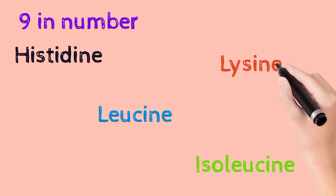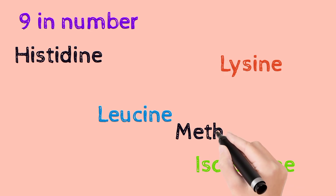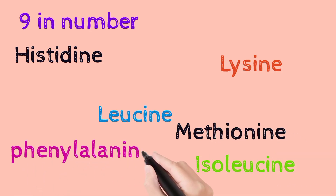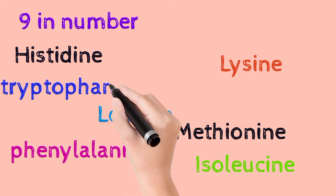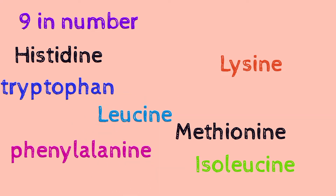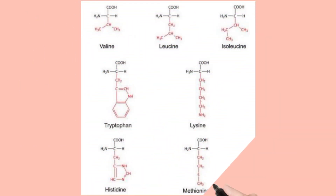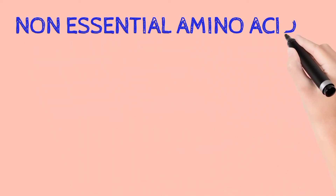There are nine essential amino acids in our body: histidine, isoleucine, leucine, lysine, methionine, phenylalanine, tryptophan, and valine. Here is a chart showing structures of some of the essential amino acids — valine, leucine, isoleucine, tryptophan, lysine, histidine, and methionine.